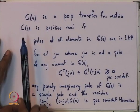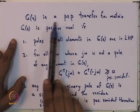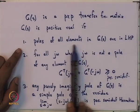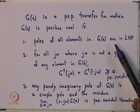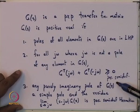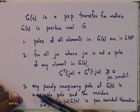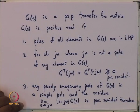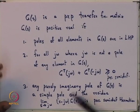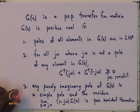If you just specialize and take G to be a 1×1 transfer function, then condition 1 says poles are all in the left half plane, which is the stability condition; condition 2 is the Nyquist criterion condition — the Nyquist plot in the first and fourth quadrant. Condition 3 is an additional condition that appears in the matrix case. In the scalar case it is clearly true, but in the matrix case it is more involved and therefore this condition makes its appearance.